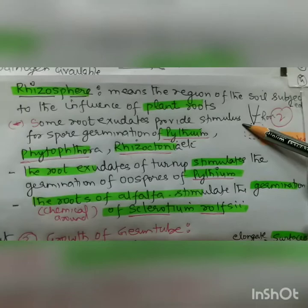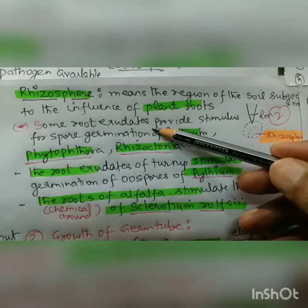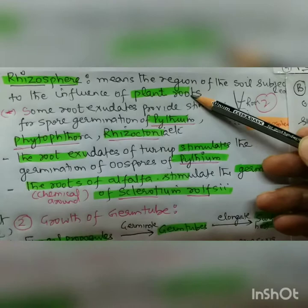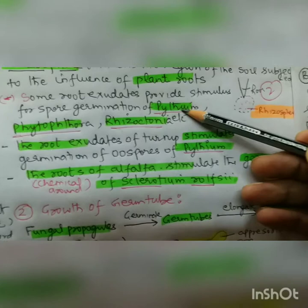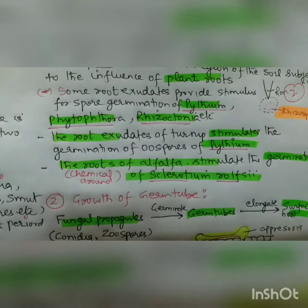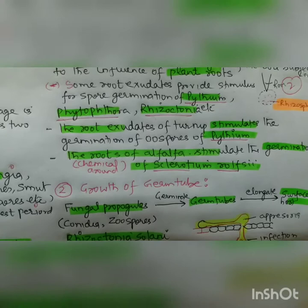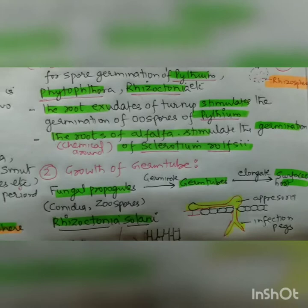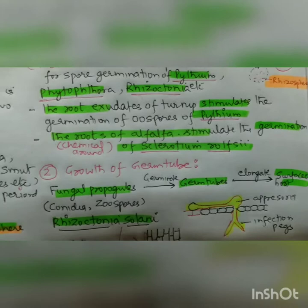For spore germination, we have two important areas. The phylosphere is the area just above the leaf, inhibited by fungi, bacteria, and blue-green algae, which act as micro-parasites or deplete substrate required by the fungus. Waxy leaf surfaces of apple also inhibit germination of fungal spores. The rhizosphere is the region of soil surface around the root influenced by plant roots. Root exudates provide stimulus for spore germination of Pythium, Phytophthora, and Rhizoctonia. Root exudates of turnip stimulate germination of oospores of Pythium, and roots of alfalfa stimulate germination of sclerotia of Sclerotium rolfsii.